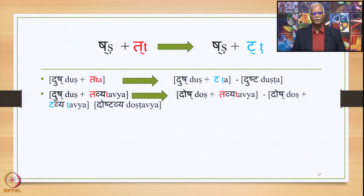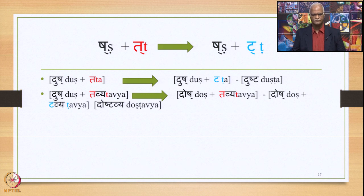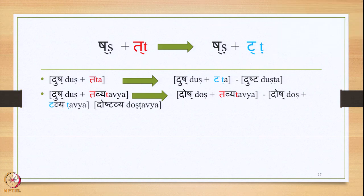Next we move to Sh plus Sh plus T and the output is Sh plus T. We have the example DUSH plus T where Sh is immediately followed by T. Since this is within a Pada, the Samhita is obligatory. This Sh is the Nimitta and T consonant is the Karyi or Sthani, and this T is substituted by T. So we have DUSH plus T giving DUSH-T. Similarly DUSH plus T: once again T is substituted by T, giving DUSH-T.